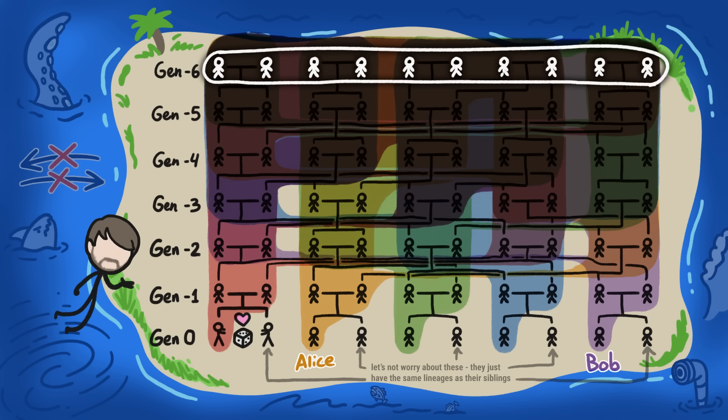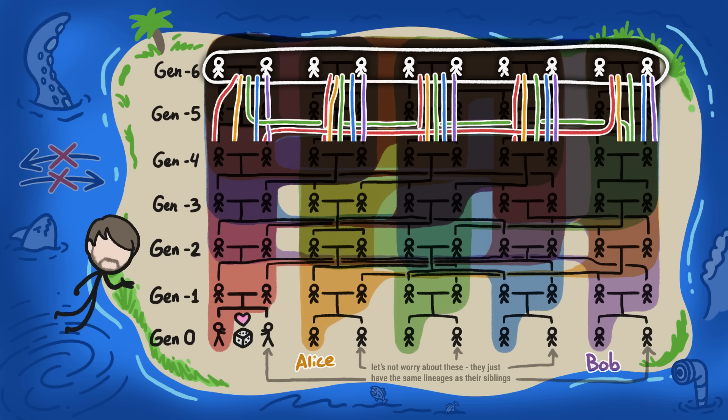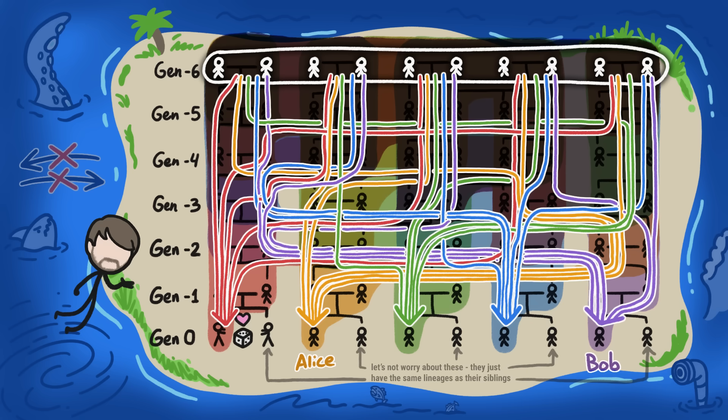And if we go further into the past, at around Gen minus 6 at most, all of the lineages end up overlapping everywhere. At this point in the past, everyone is an ancestor of everybody in Gen 0.